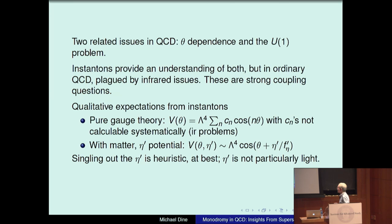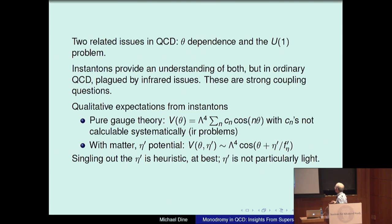From instantons, there were some qualitative expectations. First, for theta dependence, in a pure gauge theory, the vacuum energy as a function of theta would look like lambda to the fourth times C_N times some coefficients times cosine N theta, where because of these IR divergences you couldn't calculate the C_Ns, but you might expect them to be order one numbers. With matter, one expected a potential for the eta prime.